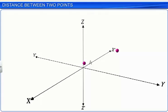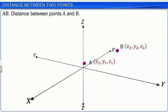Let A and B be two points. Let the coordinates of A be X1, Y1, Z1 and B be X2, Y2, Z2. We need to find the distance between points A and B. Let's denote it with AB.